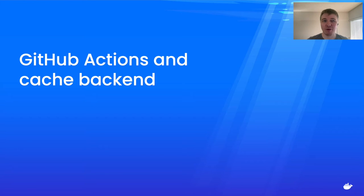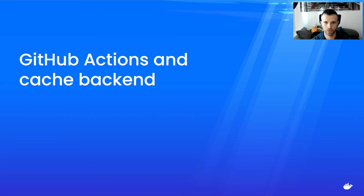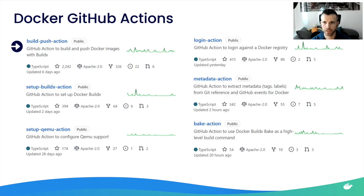Now let's talk about caching with GitHub Actions. We have six GitHub Actions today. The most significant is probably the build-push action, which builds and pushes Docker images with BuildX, with full support for BuildKit features including multi-platform build, secrets, remote cache, and different builder deployment options.